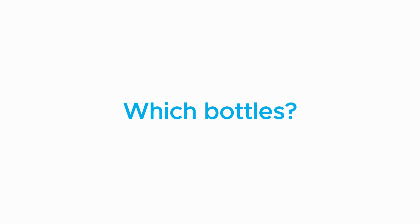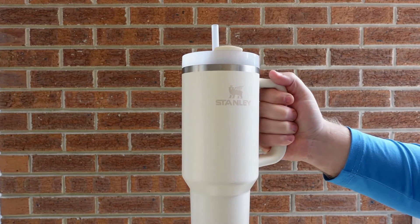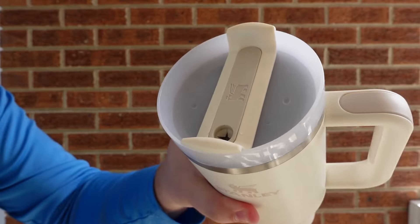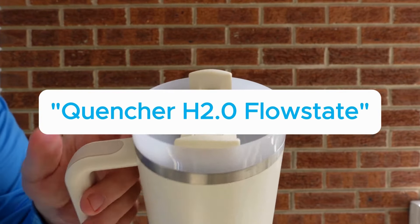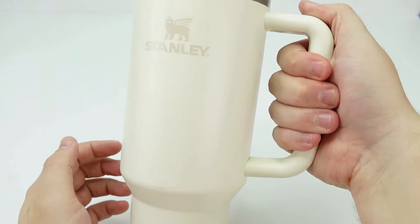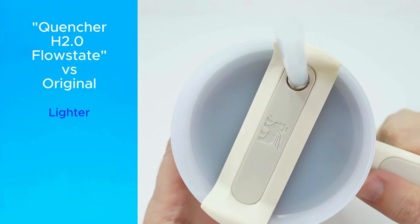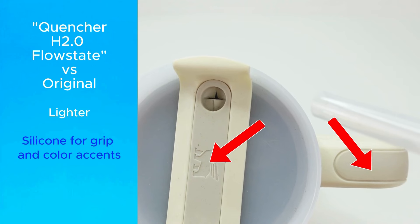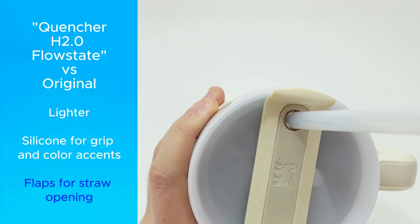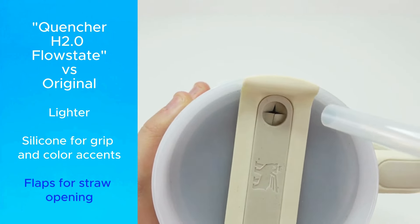Before we get started, here's a quick clarification. I don't have the original Adventure Quencher. I have Stanley's upgraded version called the Quencher H2.0 Flowstate. In addition to being a mouthful, this version has a few differences compared to the original. It's lighter, it has some silicone areas for grip and color accents, and it has some flaps around the straw opening to prevent leaks, but more on that in a minute.